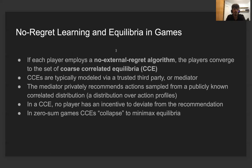The importance of no-regret learning is that there are fundamental connections with game-theoretic equilibrium concepts. First, if every player is using a no-external-regret algorithm — in the sense that the external regret is vanishing — then the empirical frequency of play will converge to the set of coarse-correlated equilibria. Coarse-correlated equilibria is an important solution concept in game theory, which is a generalization of Nash equilibria. In multiplayer general sum games, it is common to consider equilibrium concepts more general than Nash equilibria, since the latter are believed to be computationally intractable.